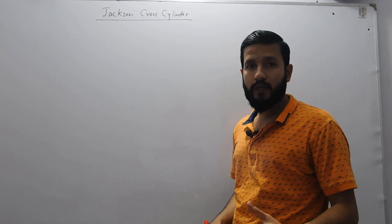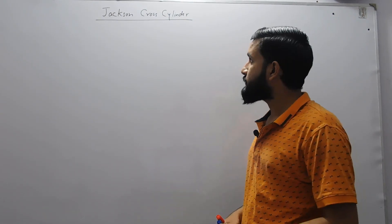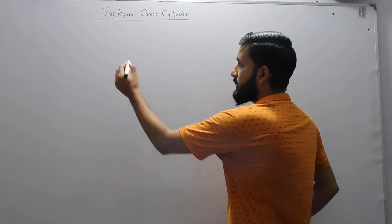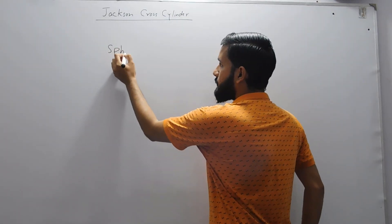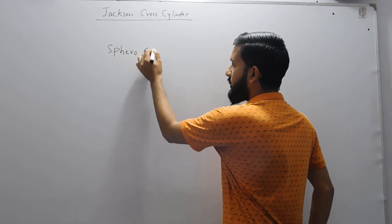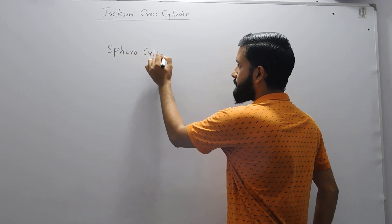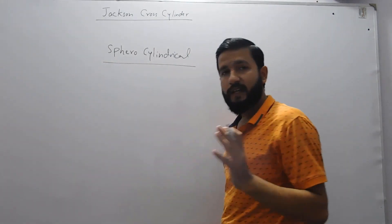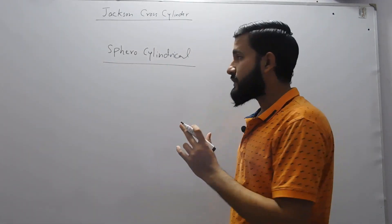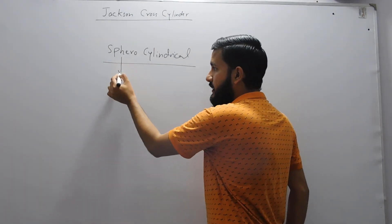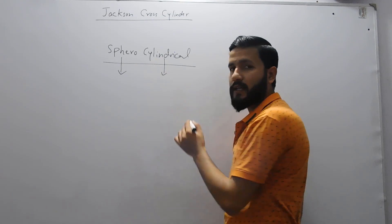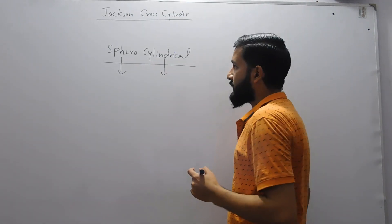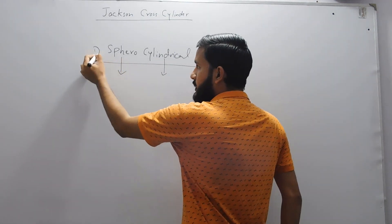Let us start with its definition. Jackson Cross Cylinder is basically a sphero-cylindrical lens. It means that this lens has both a spherical lens as well as a cylindrical lens incorporated into it. This is the first point in the definition.